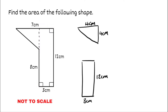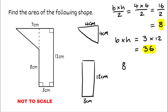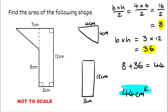For the triangle: base times height divided by two — four multiplied by four is sixteen, divided by two gives us eight. For the rectangle: base times height — three multiplied by twelve gives us 36. To find the total area of the compound shape we add these together: eight plus 36 gives us 44. Our final answer is 44 centimeters squared.